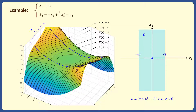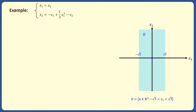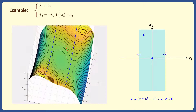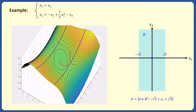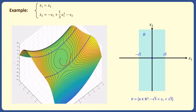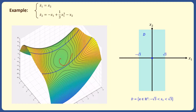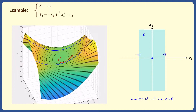But outside d we see there are level curves with negative values. Since v-dot is negative definite on d, the trajectories of the system can only go to inner Lyapunov surfaces. This is an example of how a trajectory of the system goes from a level set to another inner level set until it reaches the equilibrium point at the origin.